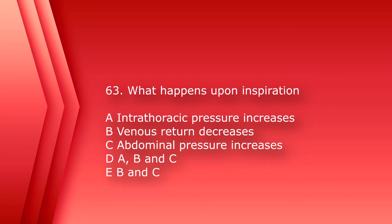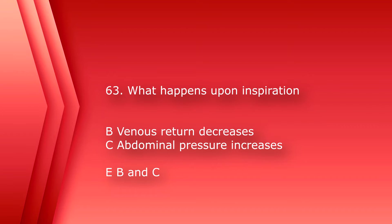Number 63: What happens upon inspiration? A) intrathoracic pressure increases, B) venous return decreases, C) abdominal pressure increases, D) A, B, and C, or E) B and C. The answer is E, B and C — both venous return decreases and abdominal pressure increases.